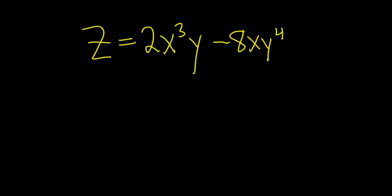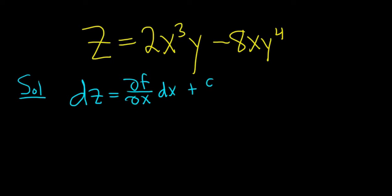In this problem, we have to find something called the total differential solution. So to find the total differential, we have to use the following formula. So dz is equal to del f del x dx plus del f del y dy.